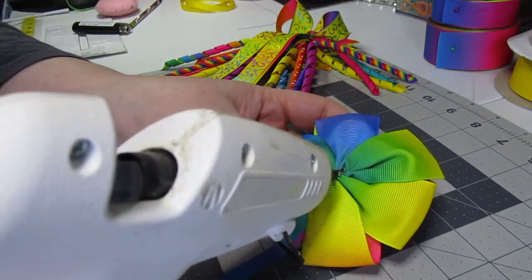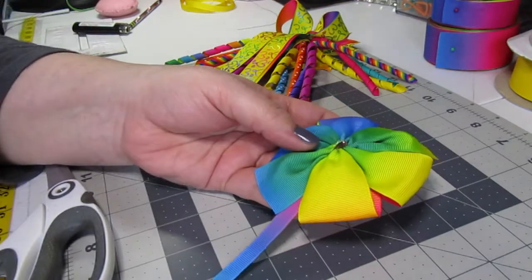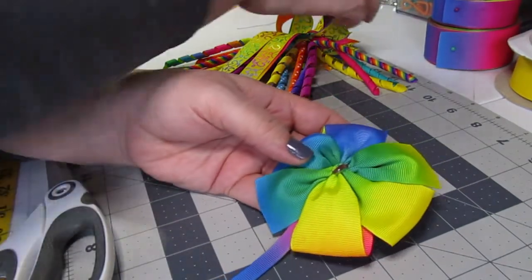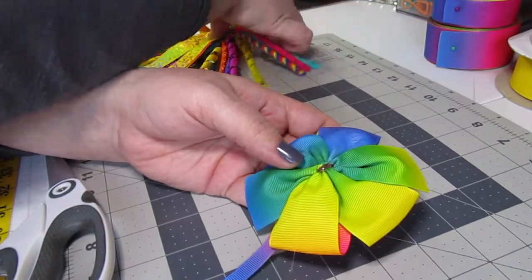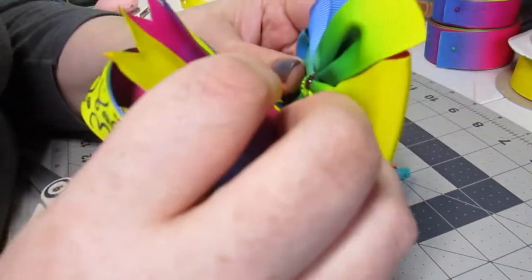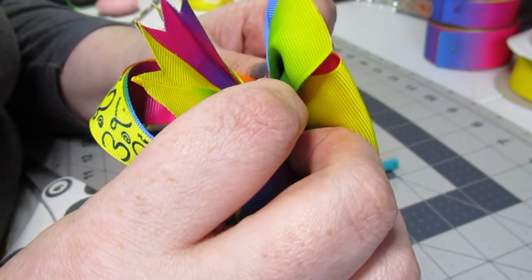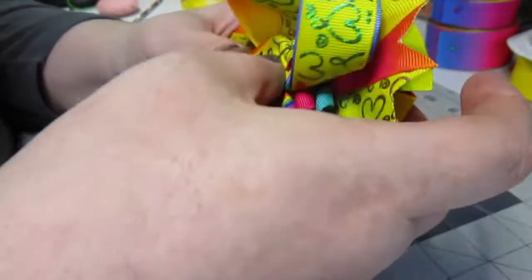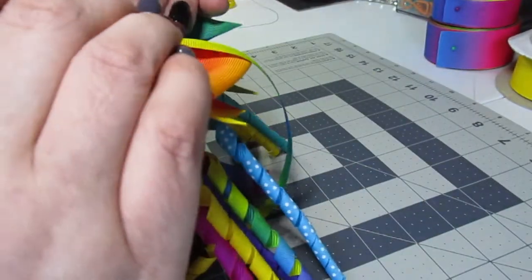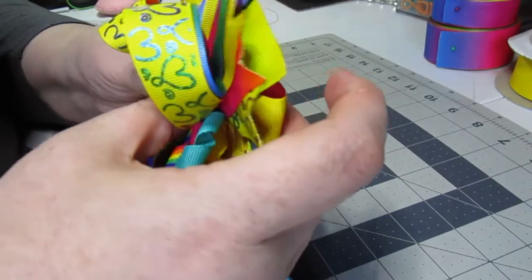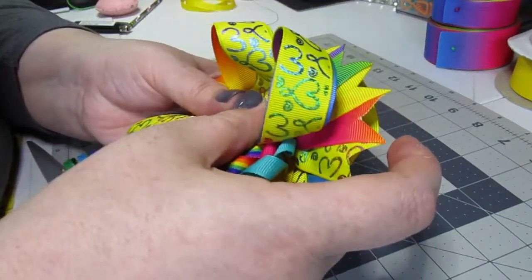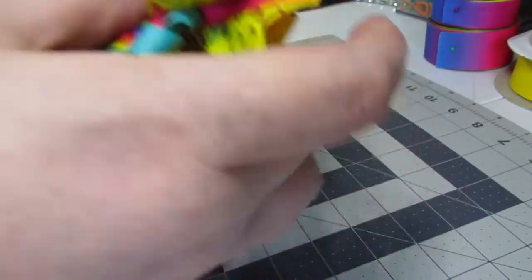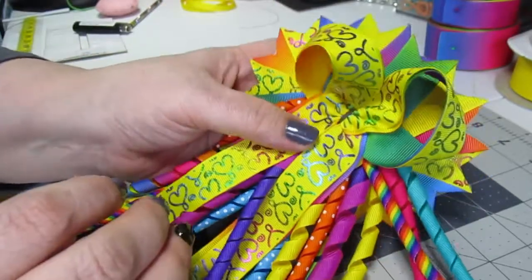All right we are going to put a dab of glue right there. Come back to our bow and just attach it. Oh it slid. I'm going to attach it just like that.